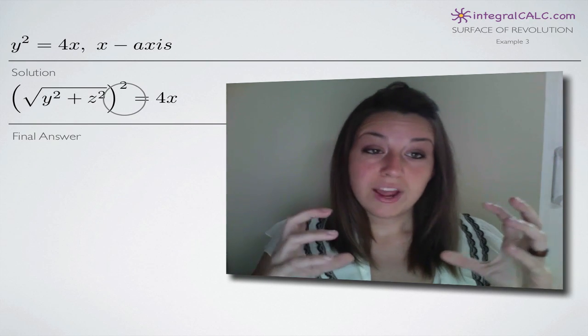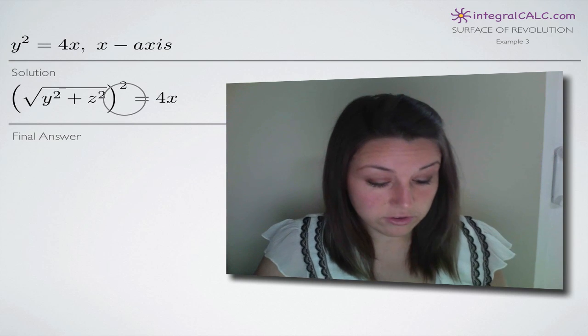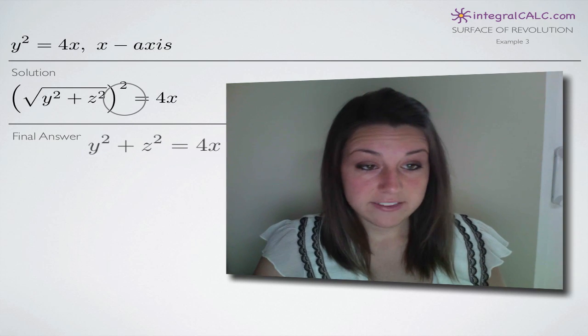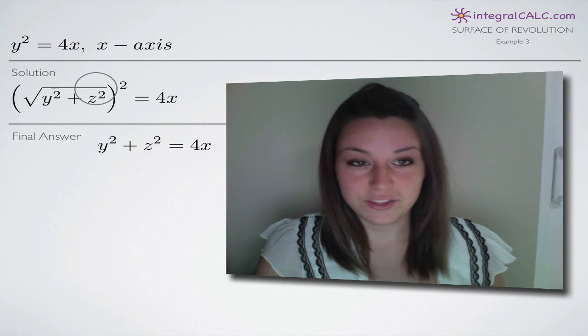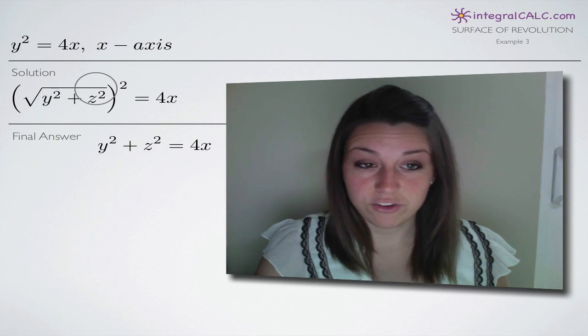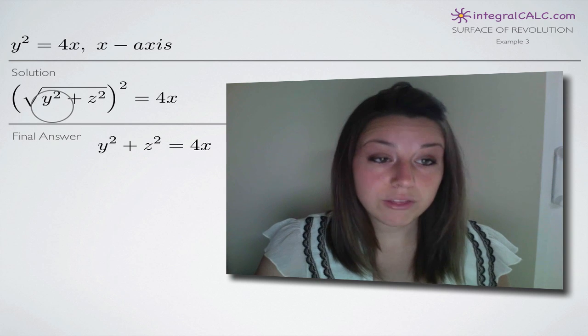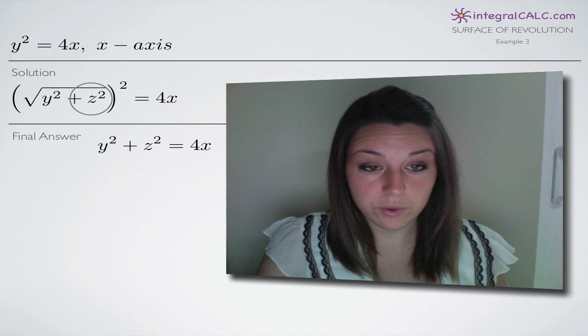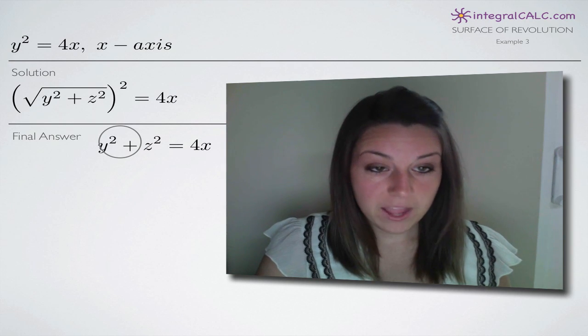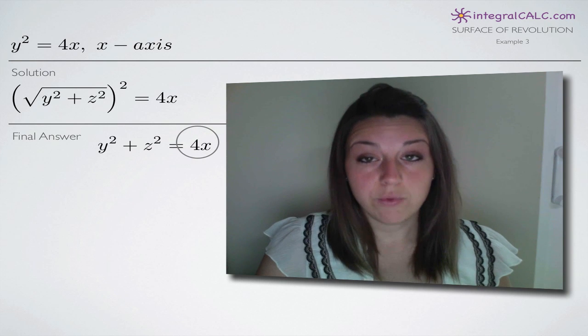When you square a square root, obviously the square root goes away. Those two things cancel each other out. So you're just left with what's inside your square root, which of course is y squared plus z squared. So you pull that out and you end up for your final answer with y squared plus z squared equals 4x.